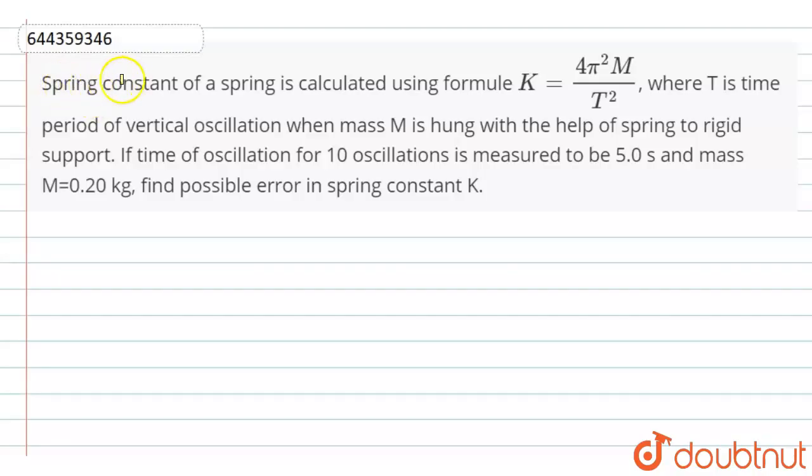Hello dear students, here the question is: spring constant of a spring is calculated using the formula K equals 4π²M divided by T² where T is time period of vertical oscillation when mass M is hung with the help of a spring to rigid support.